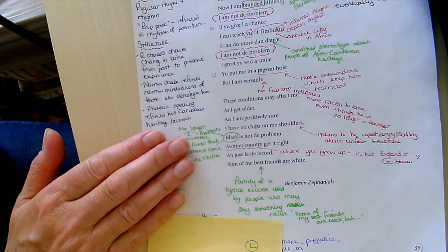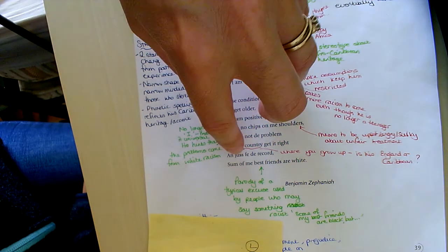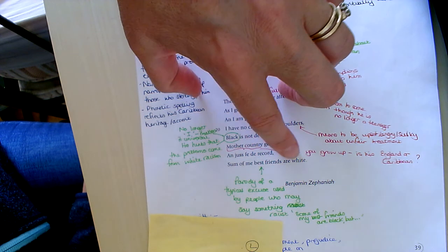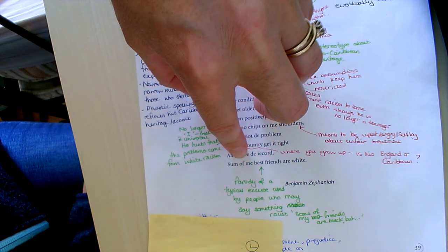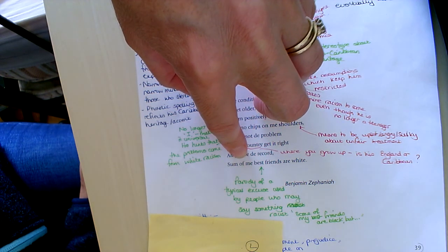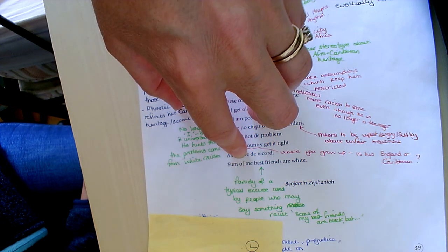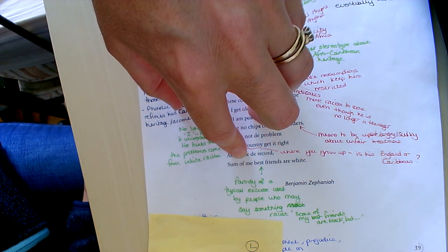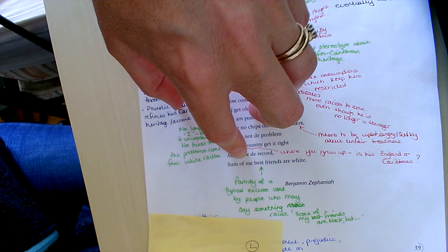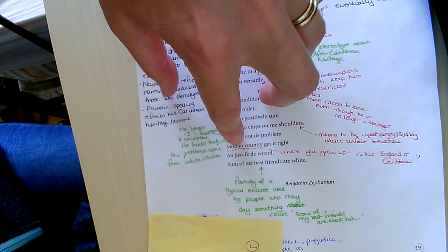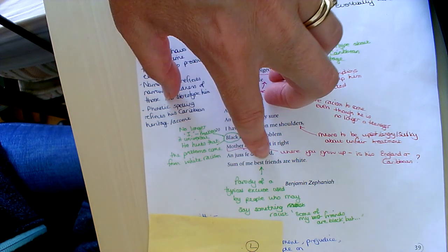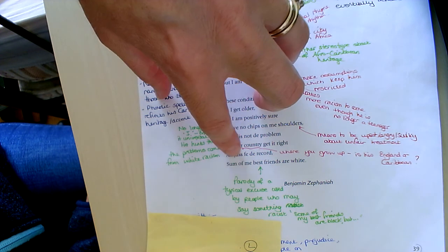And then he finishes by subverting, turning upside down, taking the mick out of a typical excuse used by people who might just be about to say something that's uncomfortable as far as racism is concerned. So let's say something racist, I'm not racist, some of my best friends are black, but. And he subverts that and says just for the record, some of my best friends are white. So he's taking the mick out of it, he's parodying that phrase.